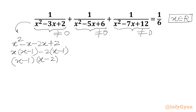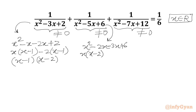Similarly, we consider our second denominator. x² - 5x + 6: we split -5x as -2x - 3x, then plus 6. Taking x common gives x(x-2), and taking -3 common gives -3(x-2). So the factorization is (x-2)(x-3).